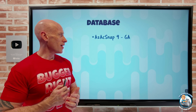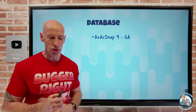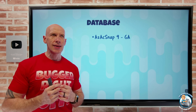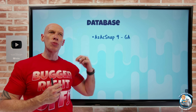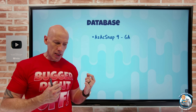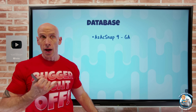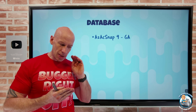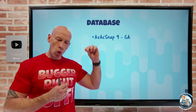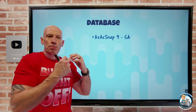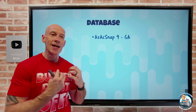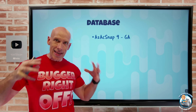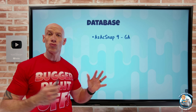On the database side, AZACSNap 9 has gone GA. This handles the orchestration required to get an app-consistent snapshot of a third-party database running on Linux — such as SAP HANA, Oracle Database, and now also IBM DB2. It now integrates with System Managed Identity. It flushes changes out to disk, pauses changes, and integrates with Azure NetApp Files and Azure Large Instance running on bare metal to get those app-consistent snapshots.